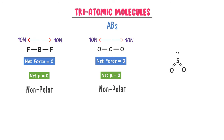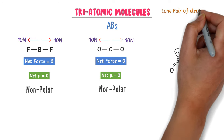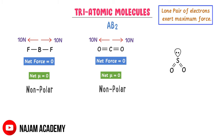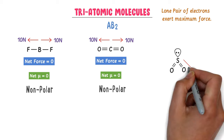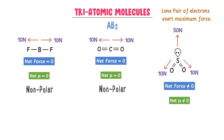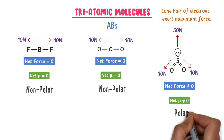Thirdly, consider sulfur dioxide. There are two oxygen atoms and one lone pair of electrons present on the sulfur atom, which is the central atom. Remember that a lone pair of electrons exerts the highest force in the molecule. Each oxygen atom exerts 10N in its direction, while the lone pair exerts 50N in its direction. The net force is not equal to 0. Thus, the net dipole moment is not equal to 0, and this is a polar molecule.